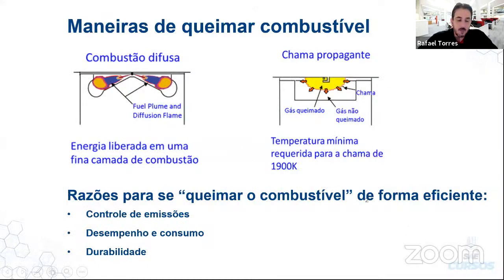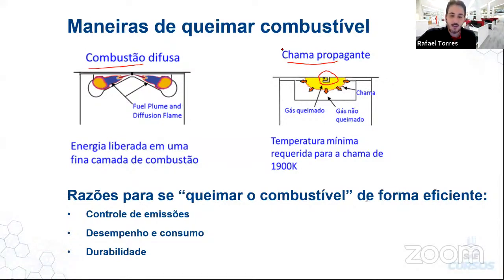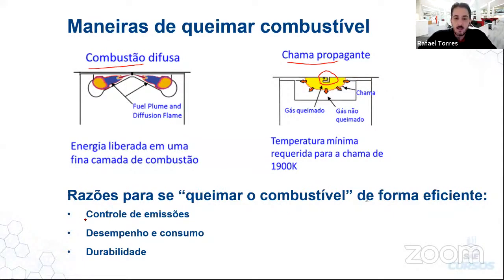Vou mostrar um pouco sobre motores diesel, que é a grande especialidade da Cummins, e calibração. Começo perguntando: mostrando algumas formas de se queimar o combustível. Falo de duas específicas — a combustão difusa, muito aplicada numa combustão por compressão no diesel, e a combustão por centelha, onde a gente precisa de uma fonte de calor externo gerada pela vela. As razões para queimar combustível eficientemente incluem controlar emissões — que será o foco —, desempenho, consumo e durabilidade.